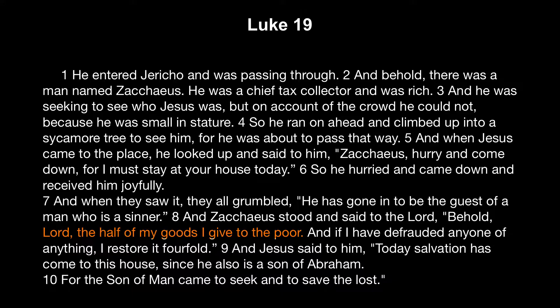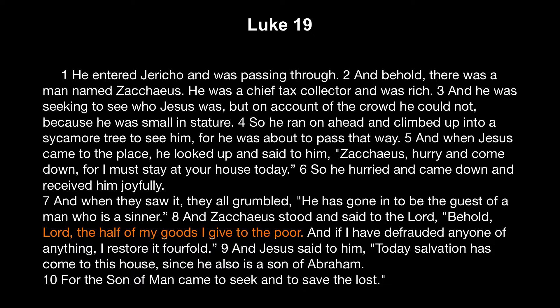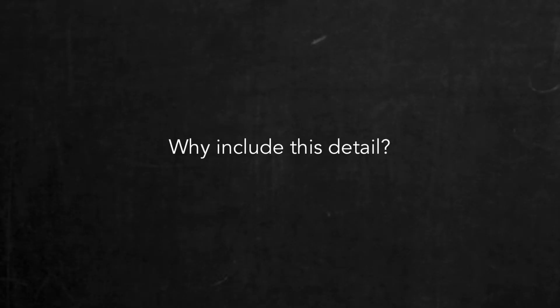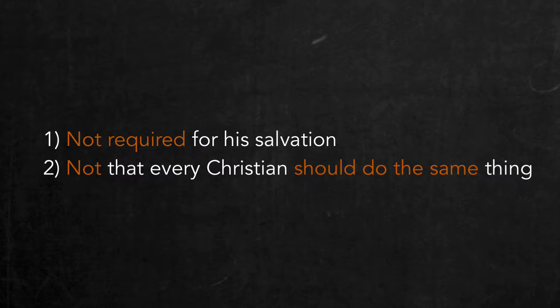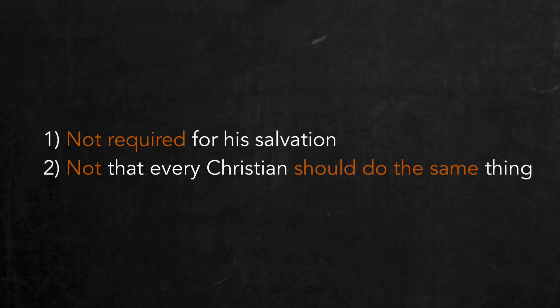For example, Zacchaeus offers to give half his wealth to the poor. Why is this detail included in the story? It's not as though he wouldn't have been saved without it, or even that every Christian should do the exact same thing upon their conversion. When the blind beggar is converted in the previous story, we aren't told that he did anything special like Zacchaeus does. So why is it included?